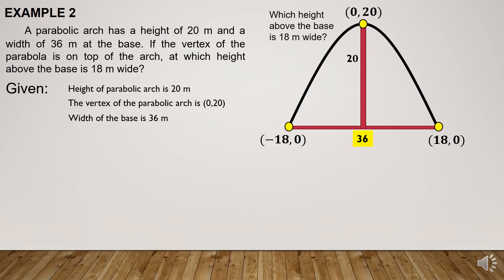Now, at which height above the base is the arc 18 meters wide? Since the width of the parabola is 18 meters, we are going to find the endpoints x of this width. From the center, which is the axis of symmetry, to one of the endpoints is 9 units. Therefore, the coordinates are (9, y), and on the other endpoint, which is also 9 units from the axis of symmetry.